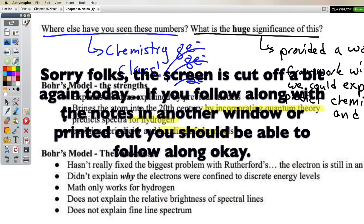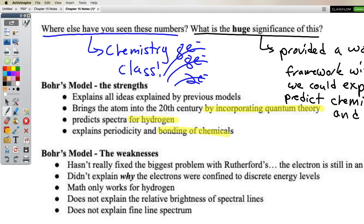Starting off where we finished last time, looking at some of the weaknesses of Bohr's model. It actually hasn't really fixed the biggest problem with Rutherford's — the electron is still in an orbit. The biggest problem being that an accelerating charge will radiate EMR and therefore lose energy, causing it to spiral in towards the nucleus and all matter will collapse, which of course cannot be true.